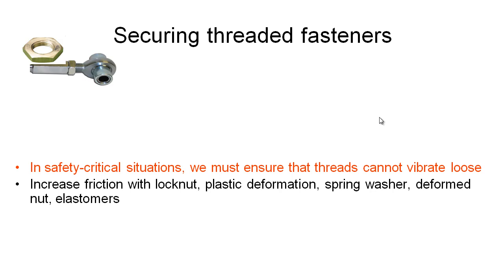The first example is a lock nut. We have a rod end here — a special type of bearing with a bolt thread on the end. To stop it turning and coming loose or changing the adjustment, we put on an additional nut, which is sometimes quite thin. We tighten this nut hard against the other component, which increases the friction on the threads and helps prevent it coming undone. It doesn't guarantee it, but makes it less likely.